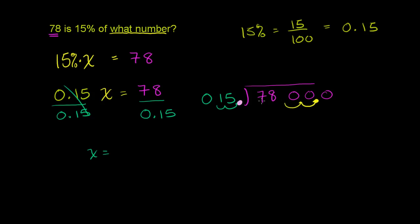15 does not go into 7. So you could do 0 times, and you could do all that, or you could just say, OK, that's not going to give us anything. So then how many times does 15 go into 78? So let's think about it. 15 goes into 64 times. It'll go, 15 times 5 is 75. That looks about right. So we say 5 times. 5 times 15.